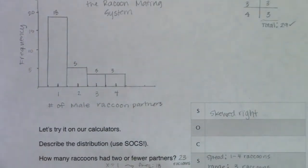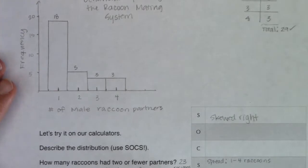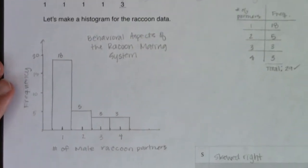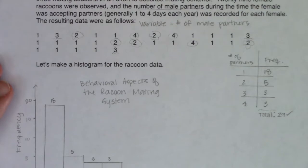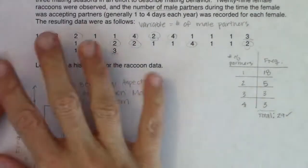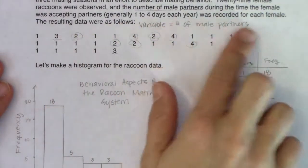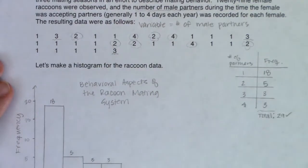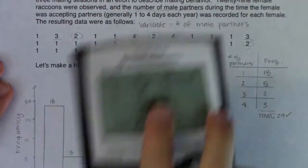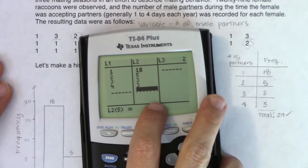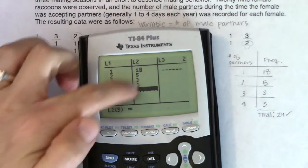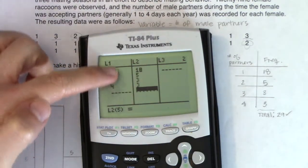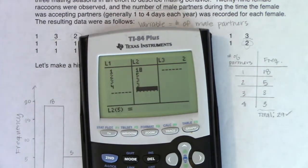For outliers I'm going to build a safety zone, but I want to show you a different way of crunching these numbers. Instead of putting all 29 data points into L1, what if you had a frequency distribution? Put the values of your variable in L1 and the frequencies in L2. Then run one-variable stats for L1, but use a comma to tell your calculator that frequencies are in L2.